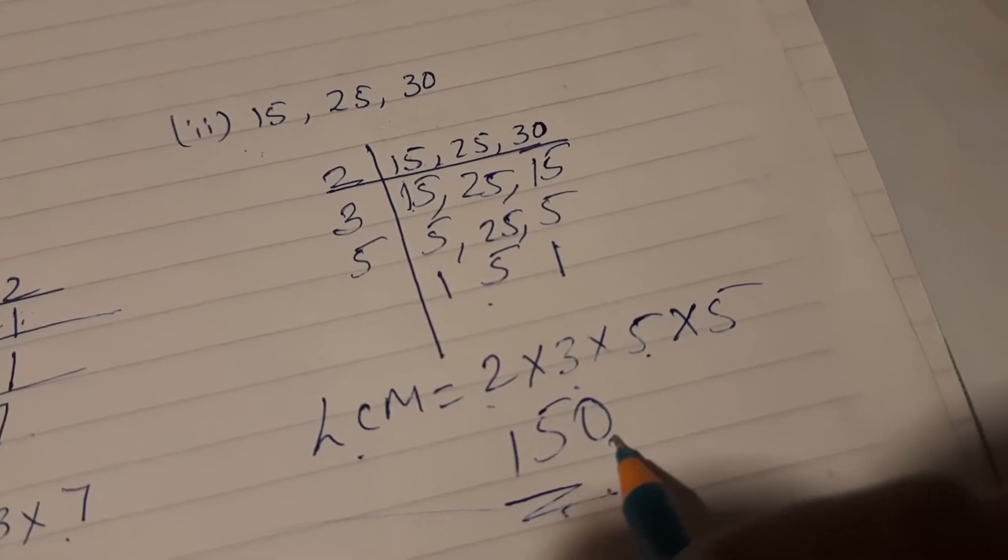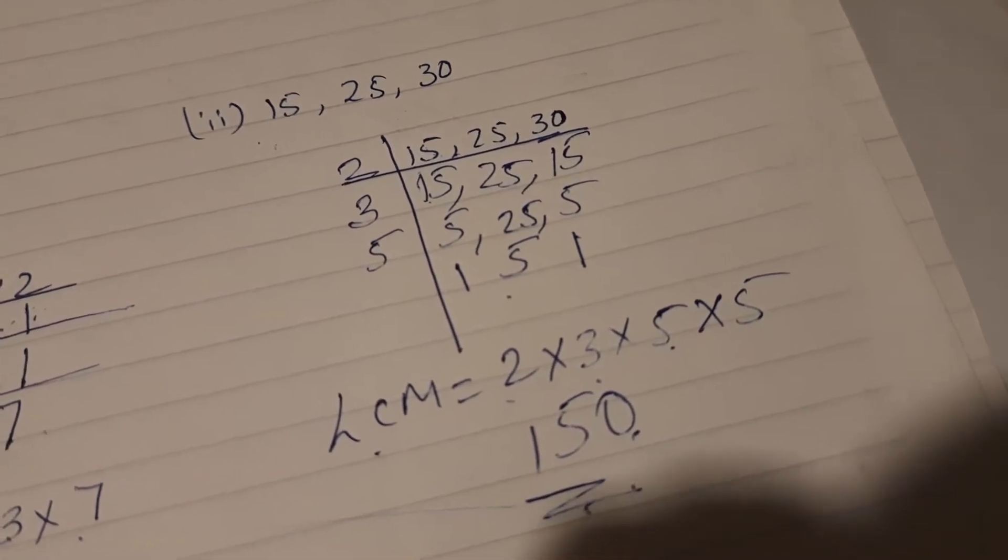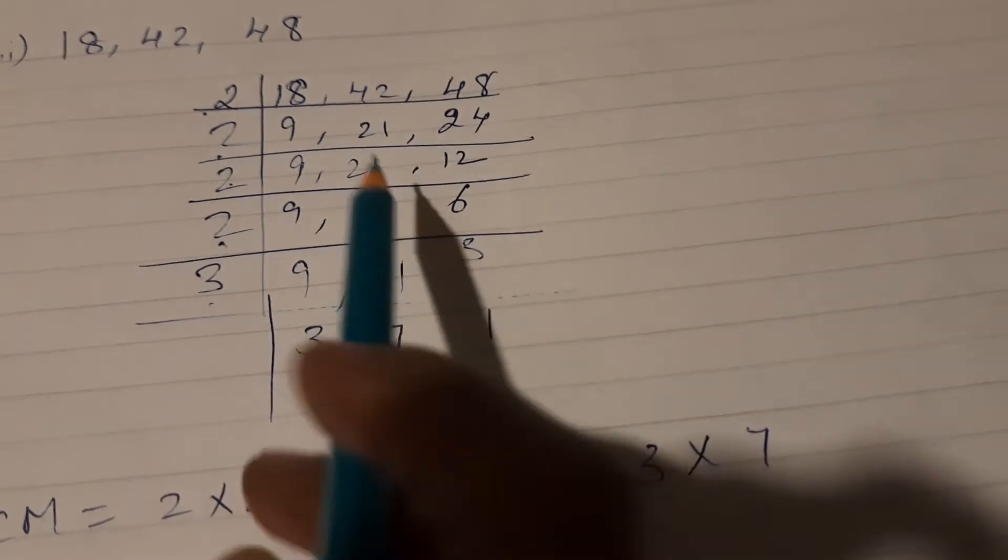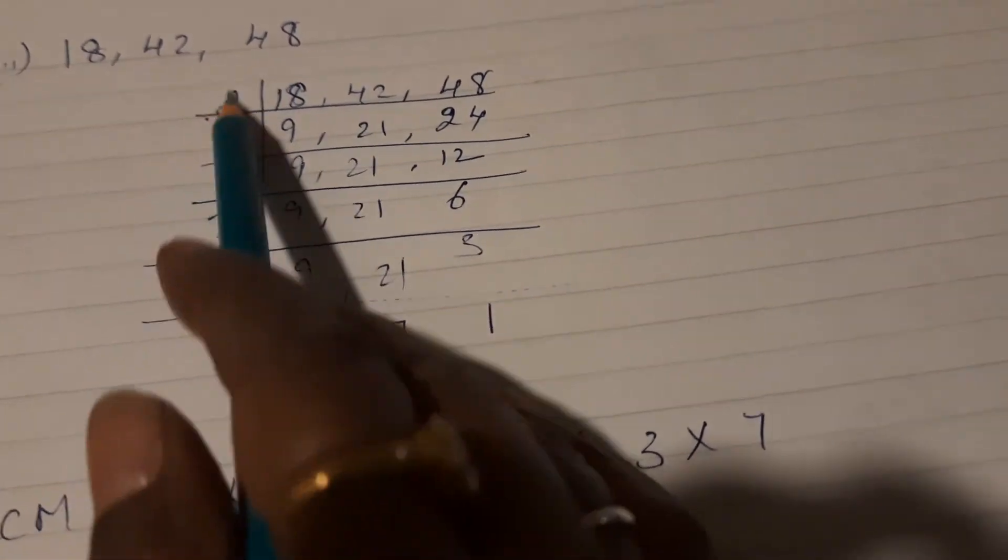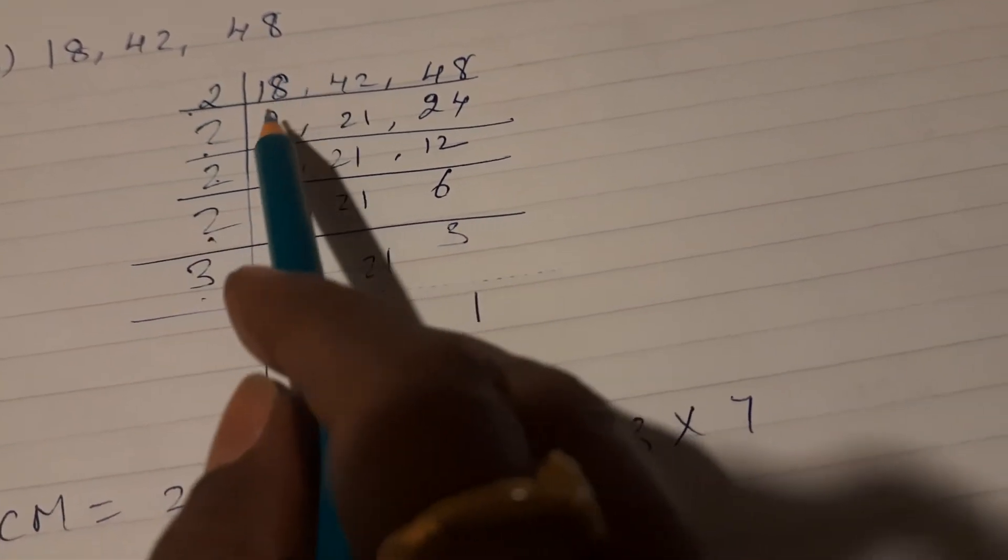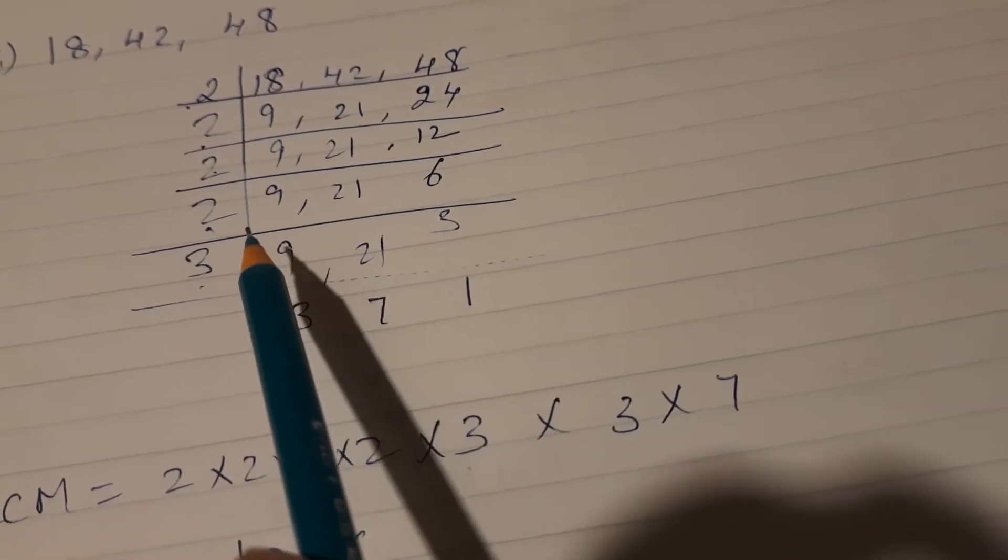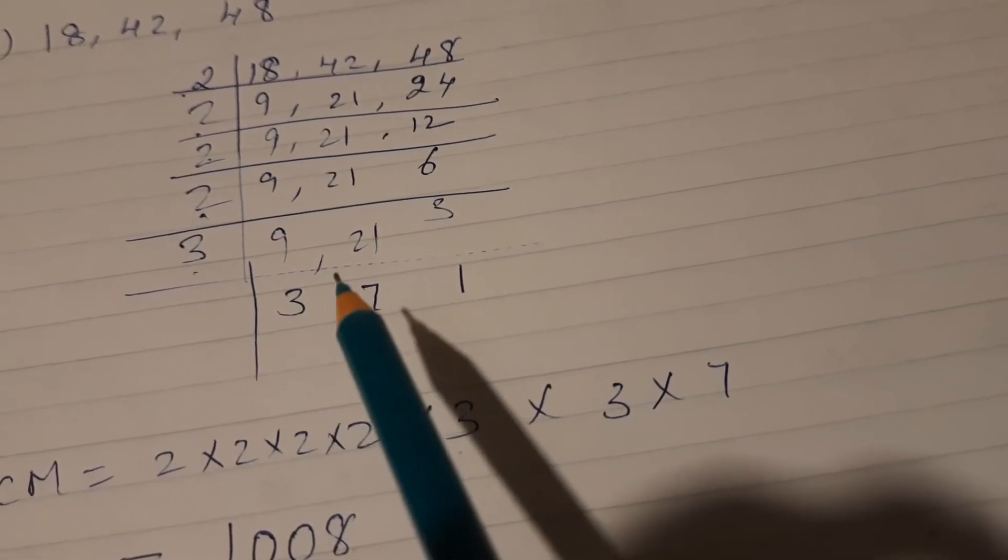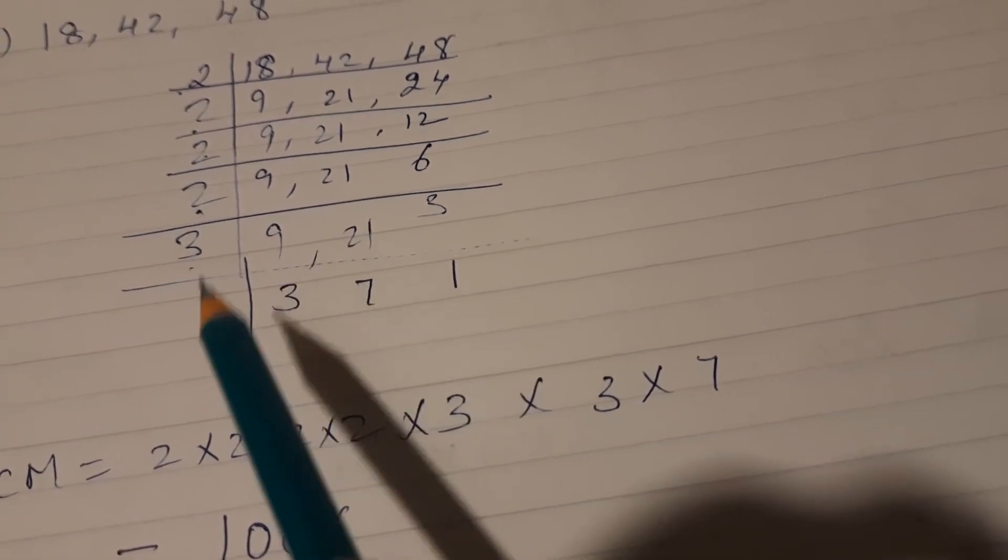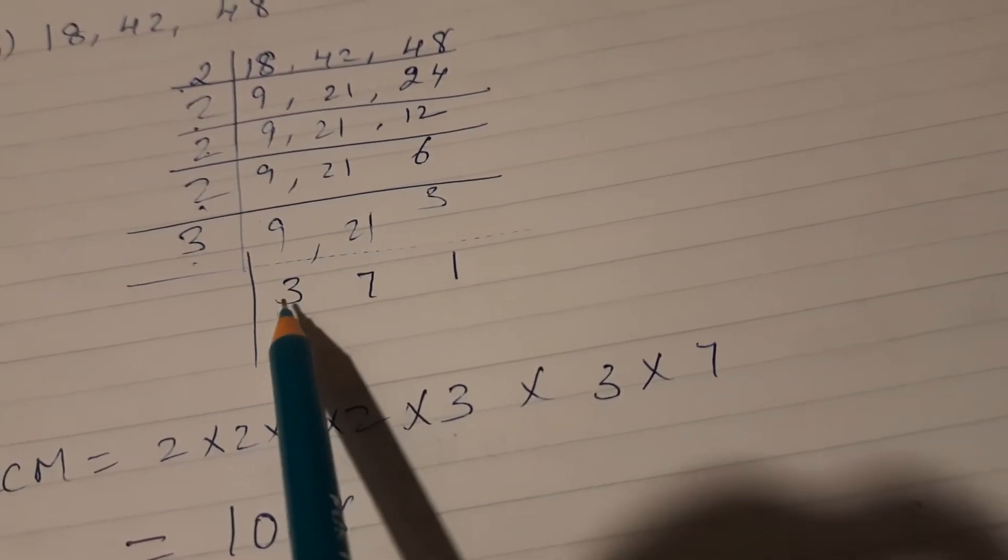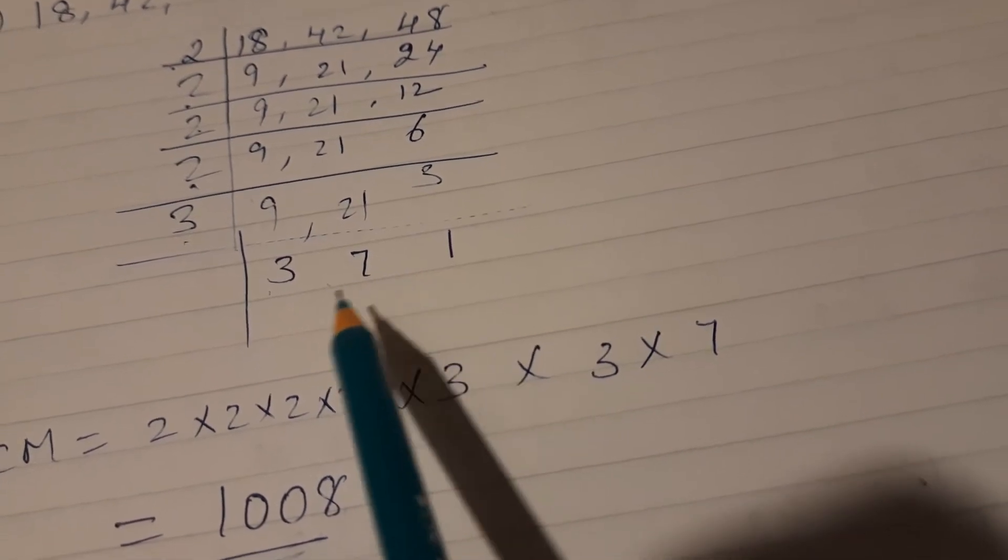So hope it's understood and it's very clear to you. Now one more sum I've already done. I'll just explain to you: 18, 42, 48. So with the help of the prime factors method or whichever method is comfortable for you, find out.